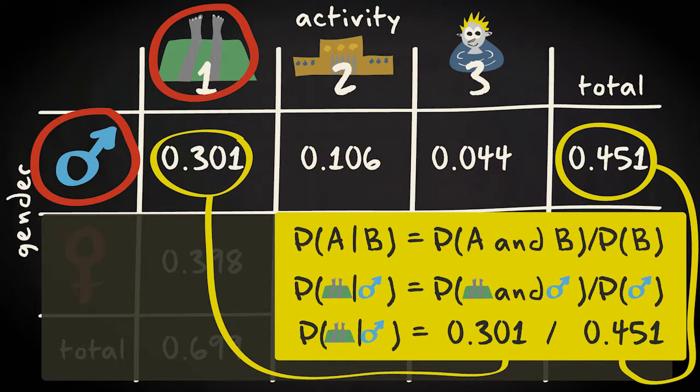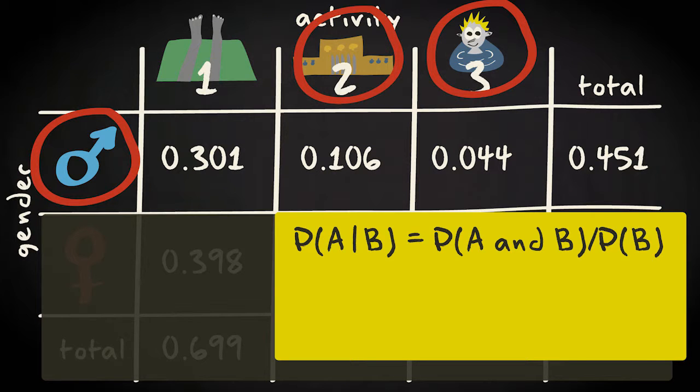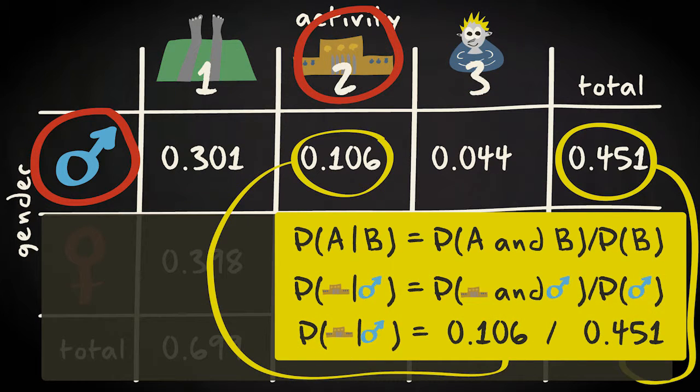To calculate the conditional probabilities for the other activities given that the person is male, the equivalent calculation is made, as shown here.